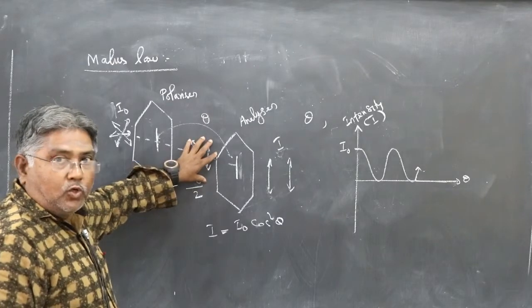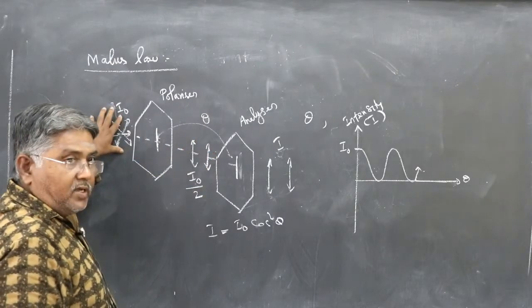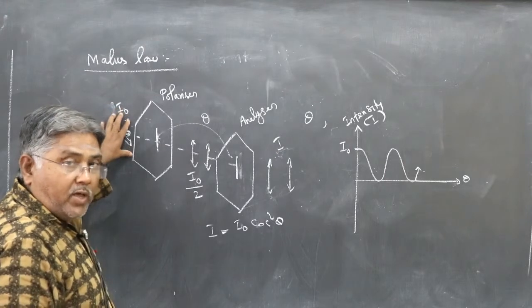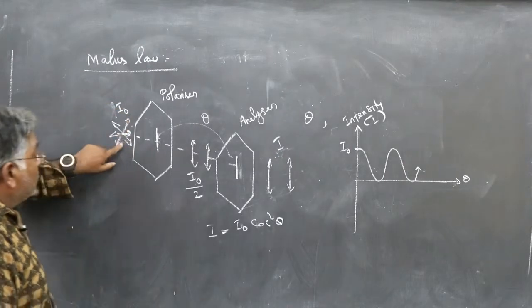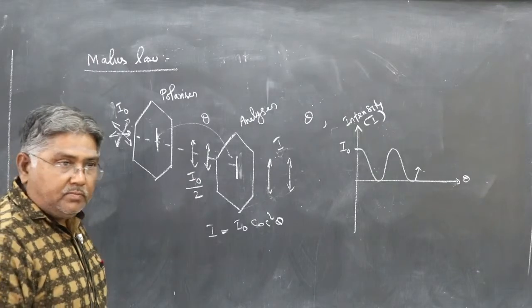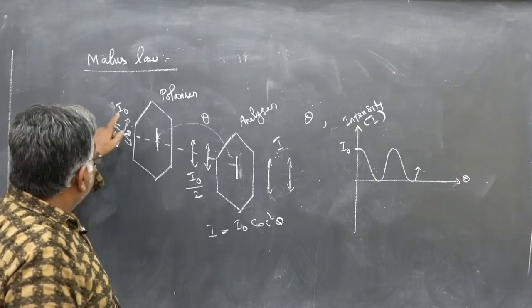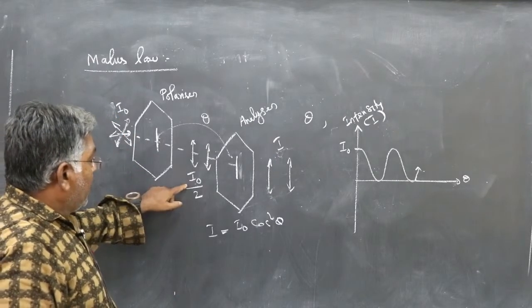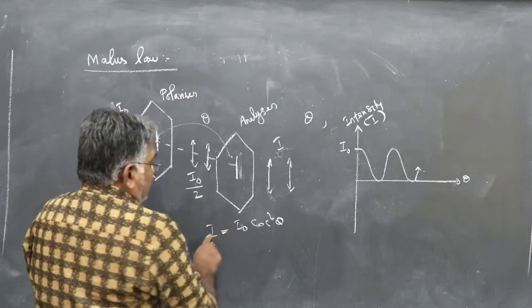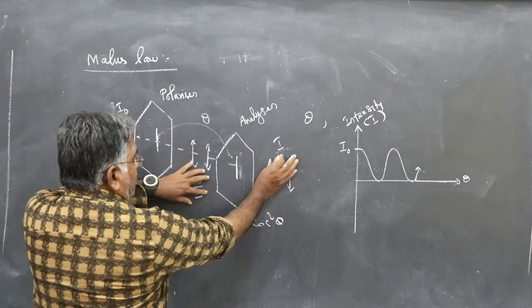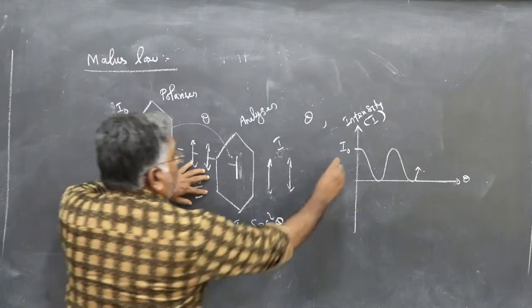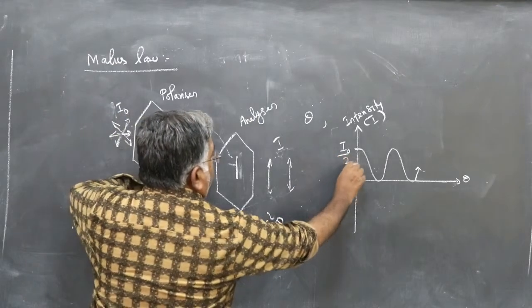Suppose the incident intensity is I₀ — then after the polarizer it has to be I₀/2. The key idea is: the intensity after the polarizer should be half the intensity of the incident unpolarized light. You can tell the light is unpolarized from the symbol or from words given in the problem. So here the peak of the graph should be marked as I₀/2.